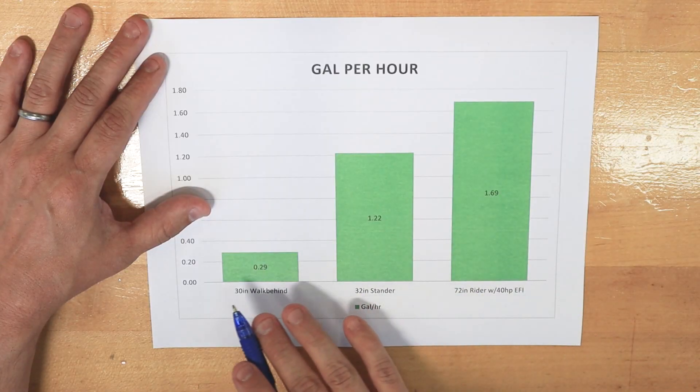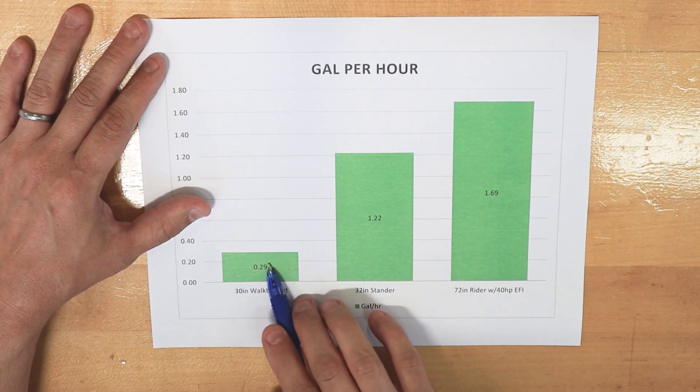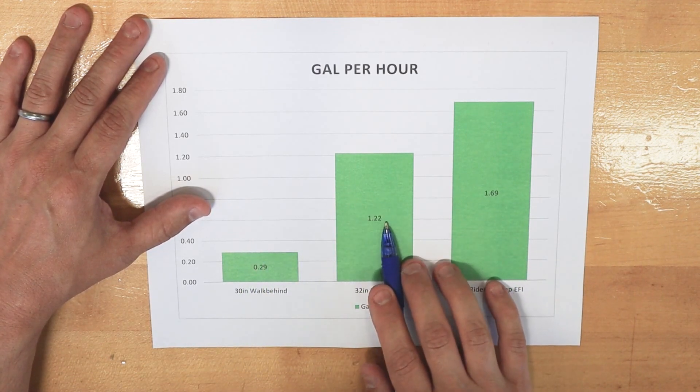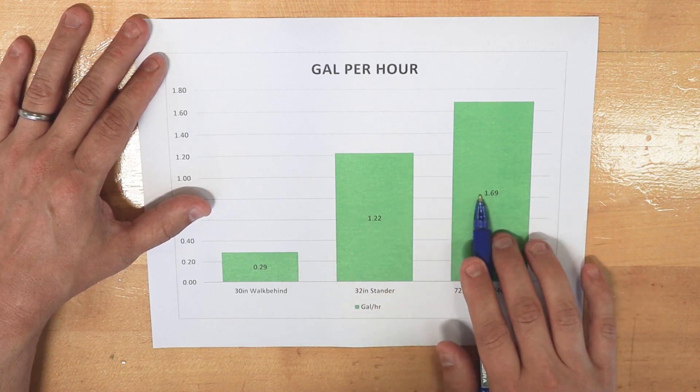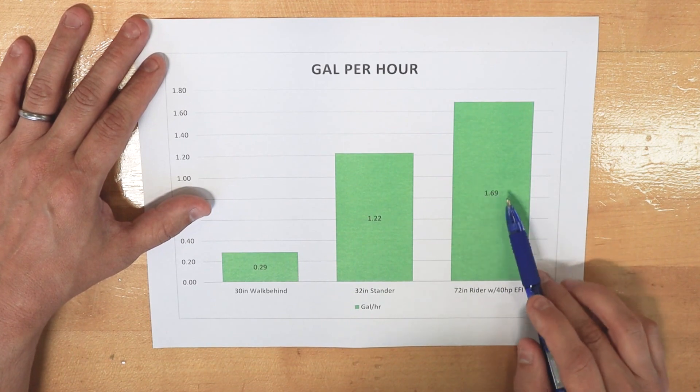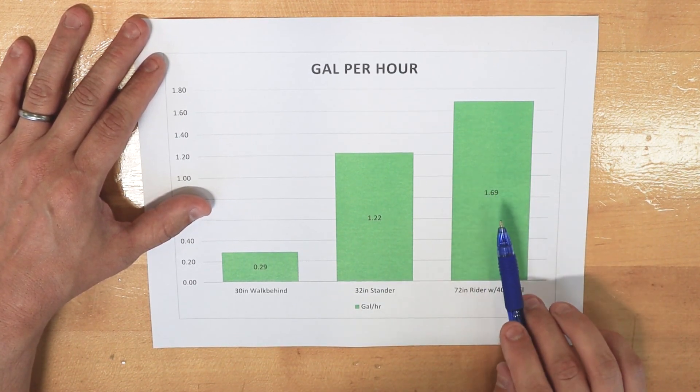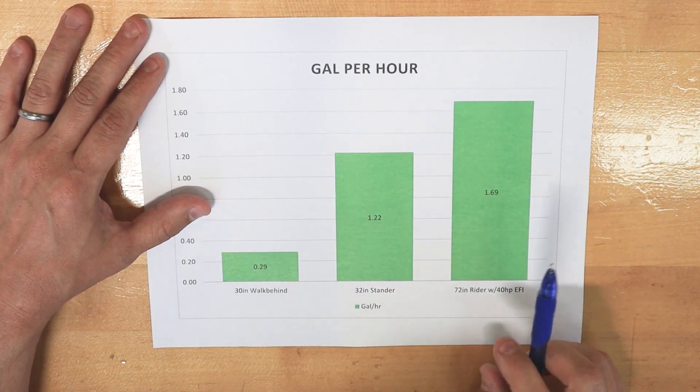And when we got gallons per hour, these are the numbers we got. So like you'd expect, a little machine doesn't consume a lot of fuel per hour. The next machine consumes a little bit more and obviously that big fire-breathing dragon consumes the most amount of fuel per hour. But there's something counterintuitive about all this that we'll talk about in a second.